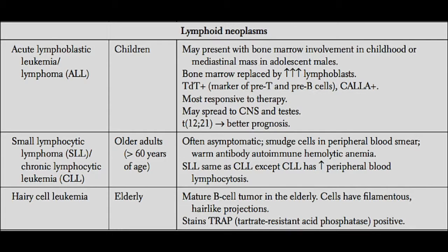Another important test we usually do on these patients to help figure out their prognosis is to check for a chromosomal translocation between chromosomes 12 and 21. It's easy to remember because those two numbers are the inverse of each other — 12 is one-two, 21 is two-one. This chromosomal translocation portends a better prognosis in a patient with ALL.